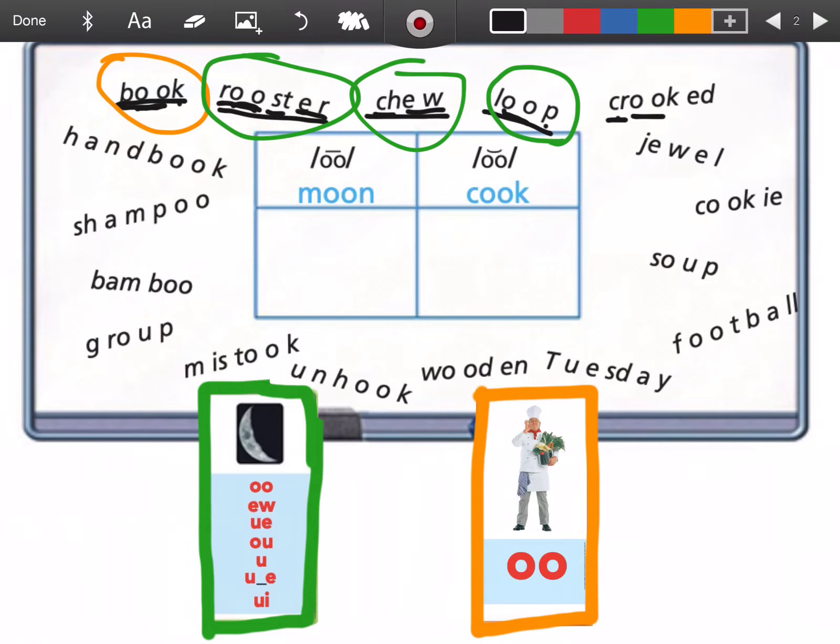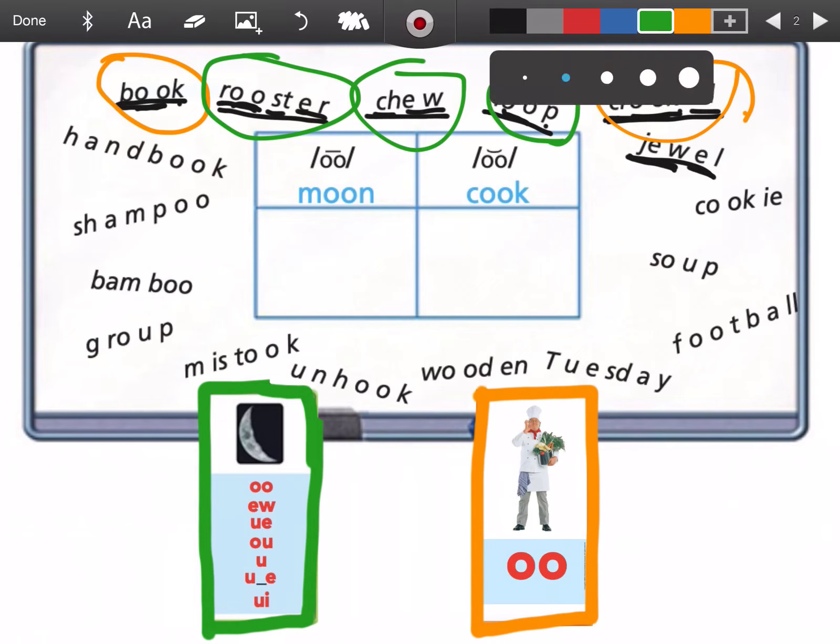Cr. Uh. Crook. C. Crook. Ed. Crooked. Crooked. Has uh. I gave you a clue because I clicked on the color. I'll try to wait next time. Here we go. J. Ooh. Jew. L. Jewel. It's ooh.